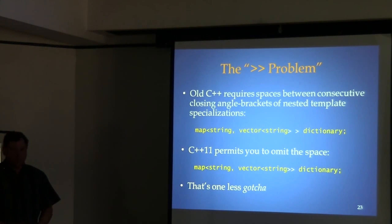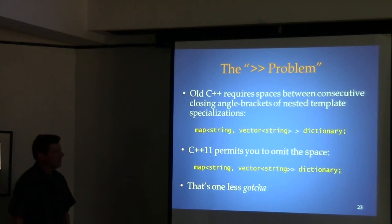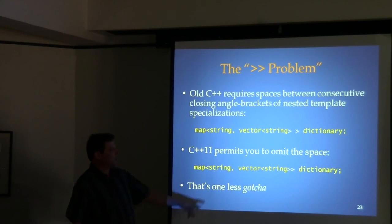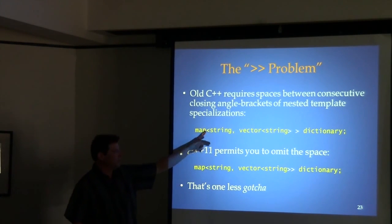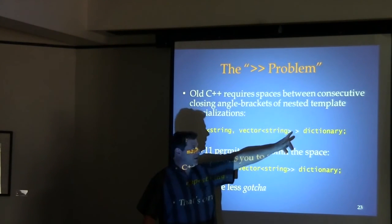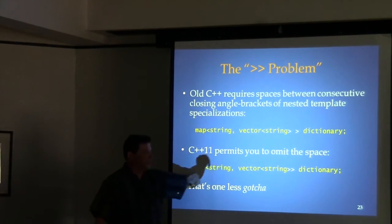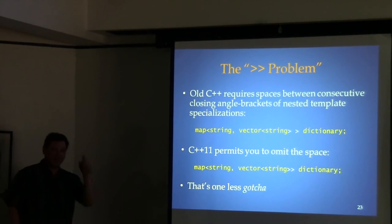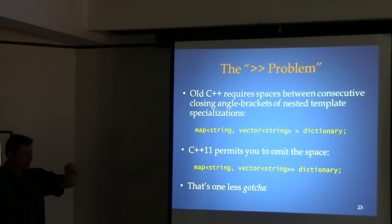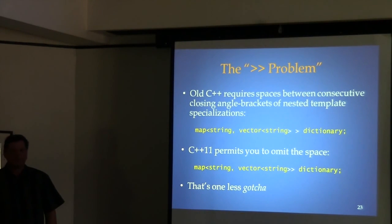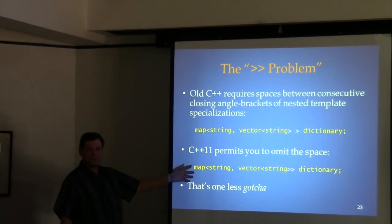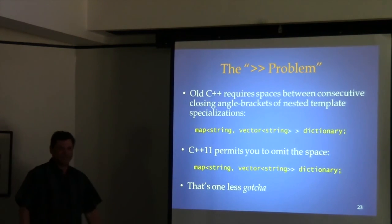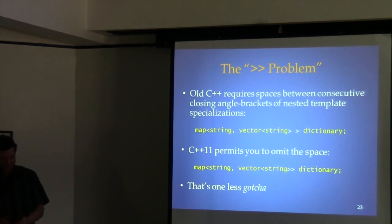This one's easy to explain. In old C++, nested template specializations required a space between the angle brackets — otherwise the parser would see it as the right-shift operator >>. In new C++, you don't have to add that space.